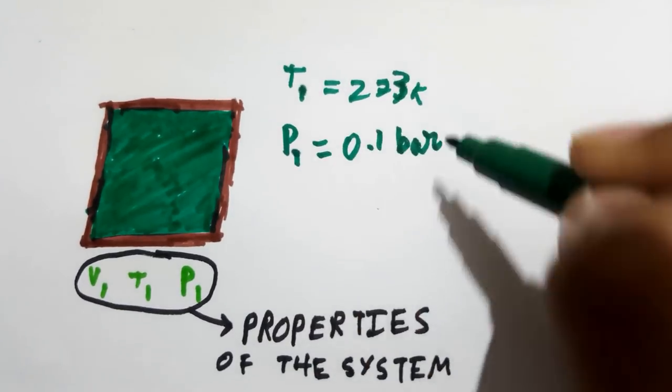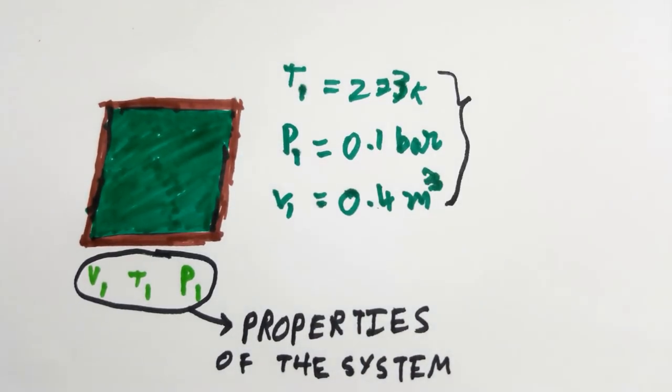When all the properties of the system have definite values, the system is said to exist in a definite state. Properties are the coordinates to describe the state of a system.